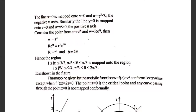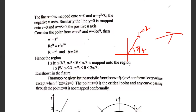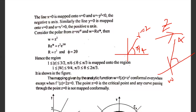For example, if a point has radius r = 2 and angle θ = π/4, then under w = z² the image has R = 2² = 4 and φ = 2·(π/4) = π/2. So the radius squares and the angle doubles.